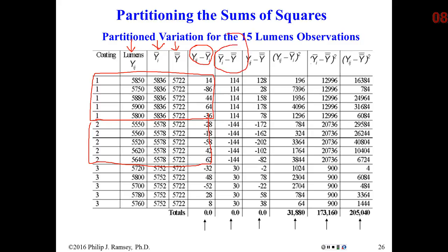The next column measures the between variation, calculated as the difference between the group average Y-bar_i and the grand average. Notice there are only three unique values because there are only three averages. But for accounting purposes, we keep track of that variation for all 15 responses. Notice that if you add up those three deviations, they again sum to zero, because they show the deviations above and below the grand average. The final column is the overall variation for each observation, and the next three columns are those deviations squared, which is what we need to actually measure the between and within variation.